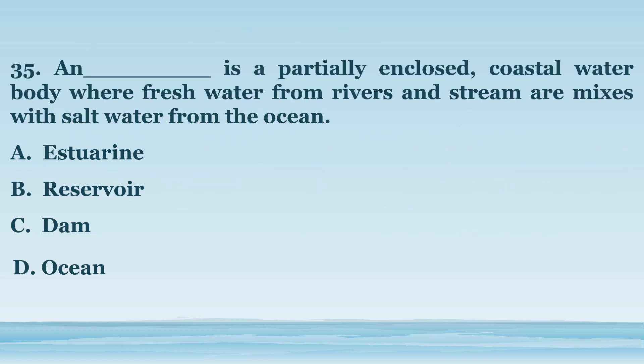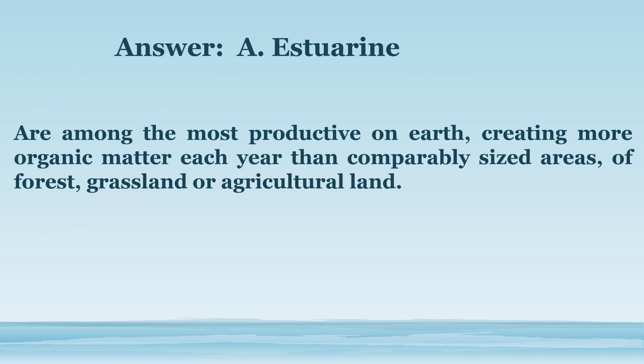Number 35. An estuary is a partially enclosed coastal water body where fresh water from rivers and streams mixes with salt water from the ocean. A. Estuarine. B. Reservoir. C. Dam. D. Ocean. The answer is letter A. Estuarine. Are among the most productive on earth, creating more organic matter each year than comparably sized areas of forest, grassland, or agricultural land.